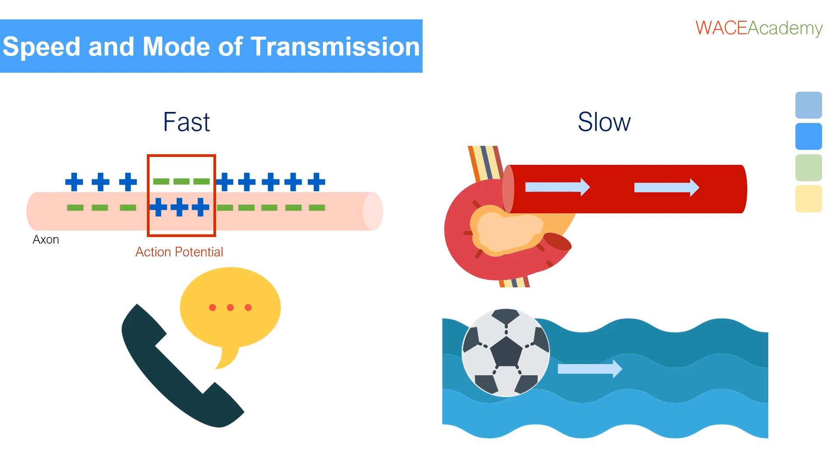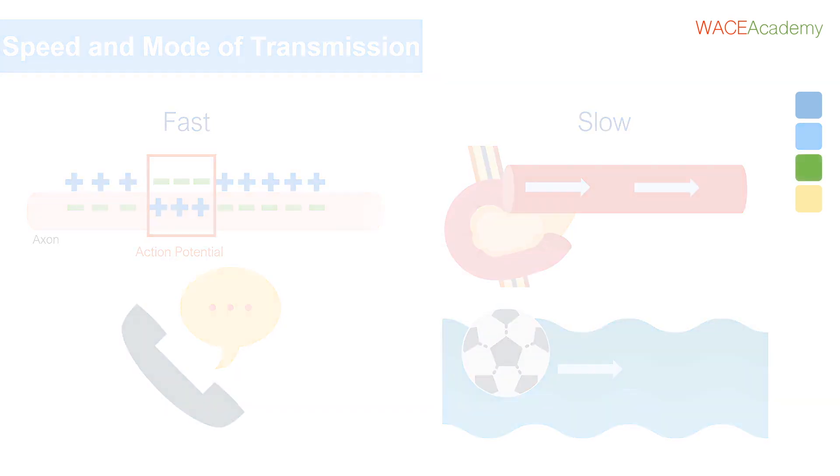Because the nervous system sends fast messages, and the endocrine system sends slow ones, it makes sense that messages from the nervous system have an effect quickly, while endocrine system messages have an effect slowly.